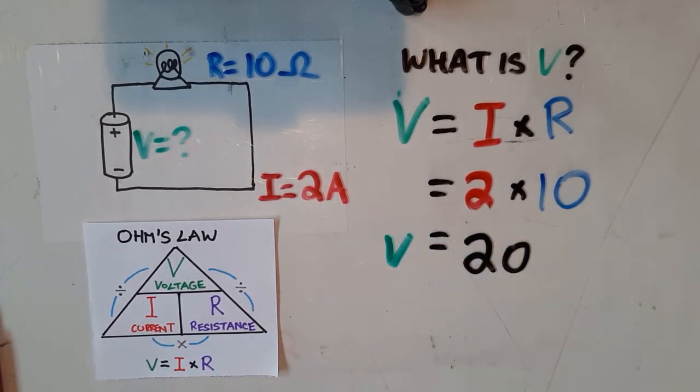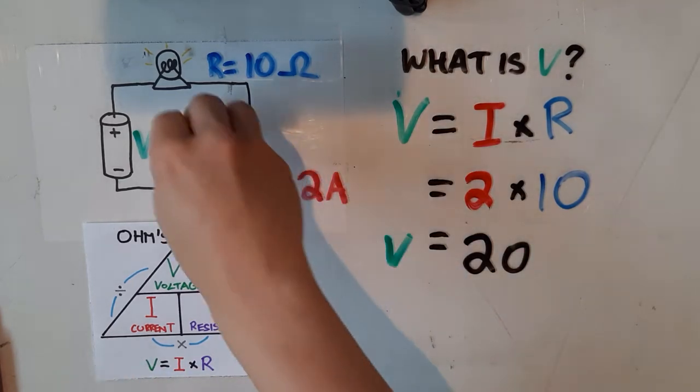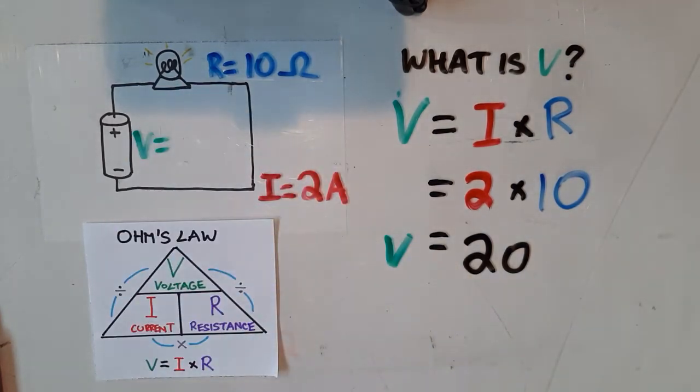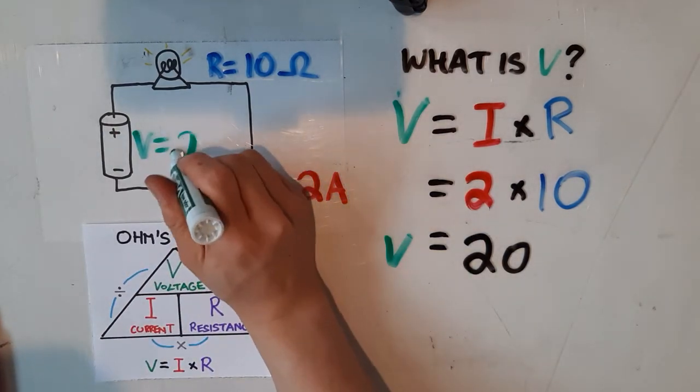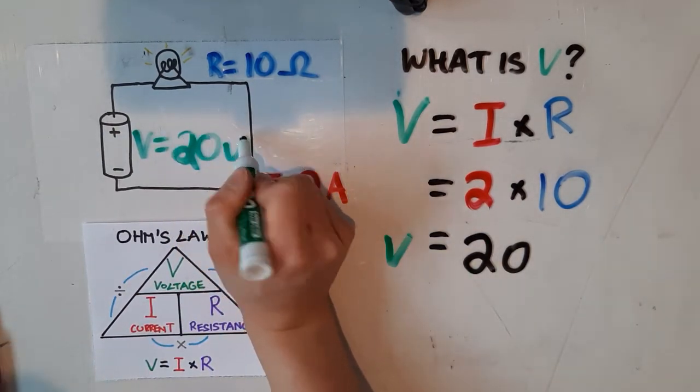and that's our voltage. So what we've done is we've used Ohm's law to figure out this problem. We now know that the voltage of this battery is 20 volts.